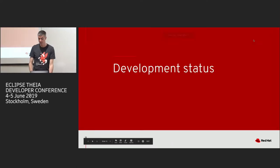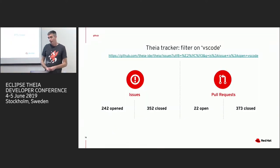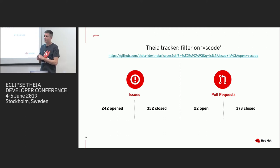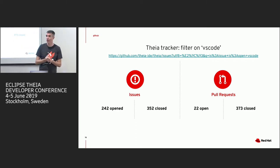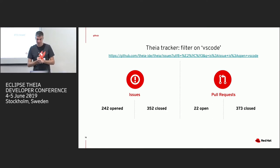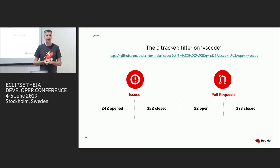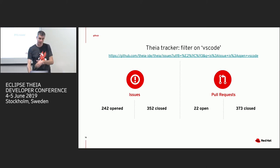Regarding development status: the VS Code keyword is very popular on the TIA GitHub. If you filter on the VS Code keyword, you can see more than 200 open issues and over 300 closed. Many pull requests have been merged as well for VS Code, VS Code Monaco, or VS Code support. This is one way to track the VS Code extension work — via the issue tracker.